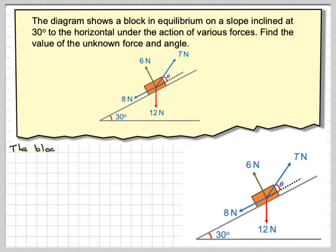Like all problems, we need to draw a good clear diagram. The block is in equilibrium. So this will be the I direction, this will be the J direction. So the I will be along the same line as the slope, the J will be perpendicular to the slope.